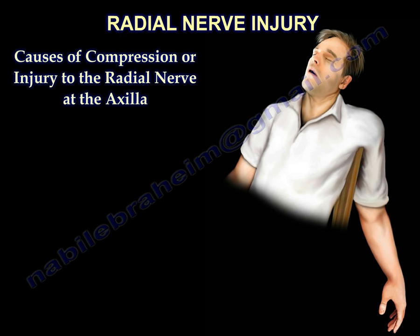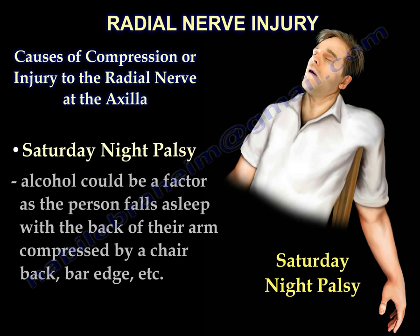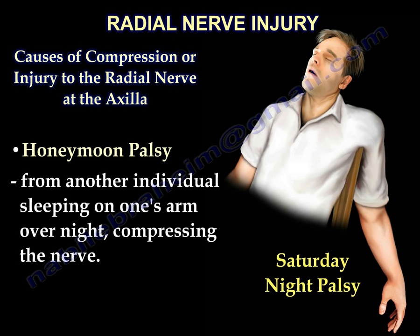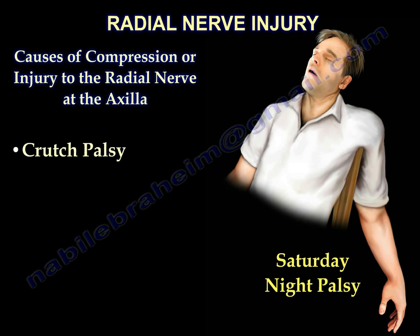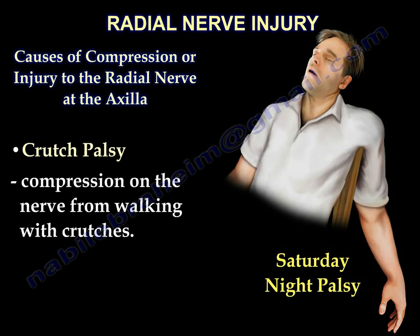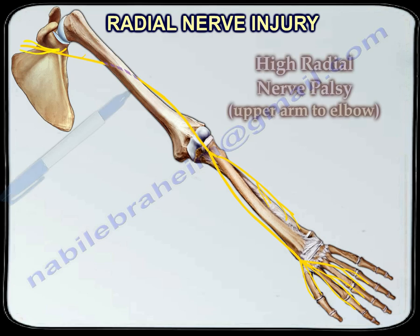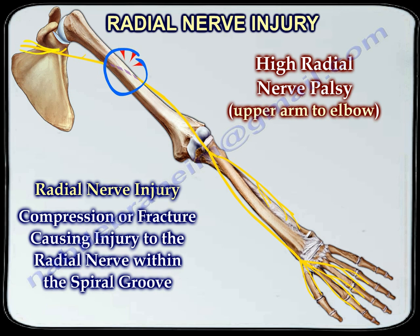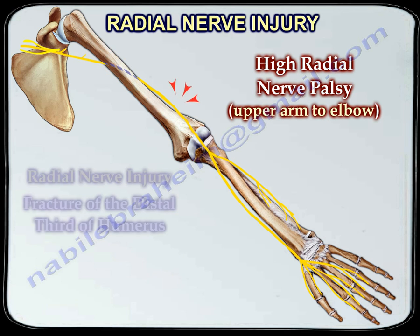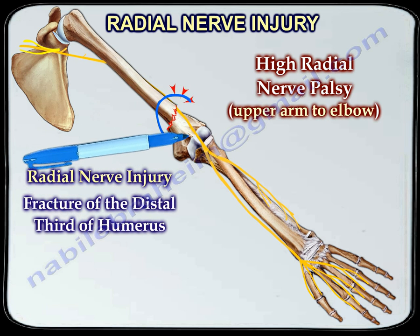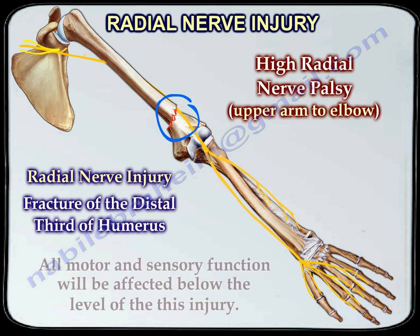Causes of compression or injury to the radial nerve at the axilla include Saturday night palsy, honeymoon palsy, and crutch palsy. High radial nerve palsy occurs from the upper arm to the elbow. This type of compression or fracture causes injury to the radial nerve within the spiral groove. Another form of high radial nerve palsy occurs due to fracture of the distal third of the humerus. All motor and sensory function will be affected below the level of this injury.